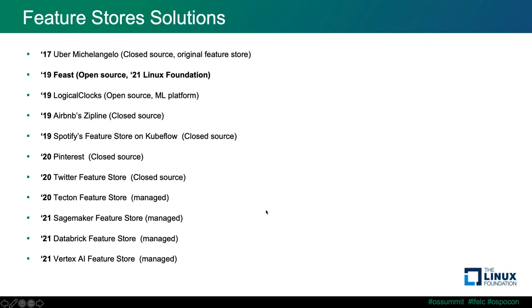Feature Store was first introduced in Uber's machine learning platform called Michelangelo back in 2017. It was developed to build reliable, uniform, and reproducible pipelines for creating, mapping, training, and prediction data at scale. Before the system was built, data scientists were building models on their laptops and engineering teams were building one-off systems to serve models in production for each project, with no established way to deploy models.